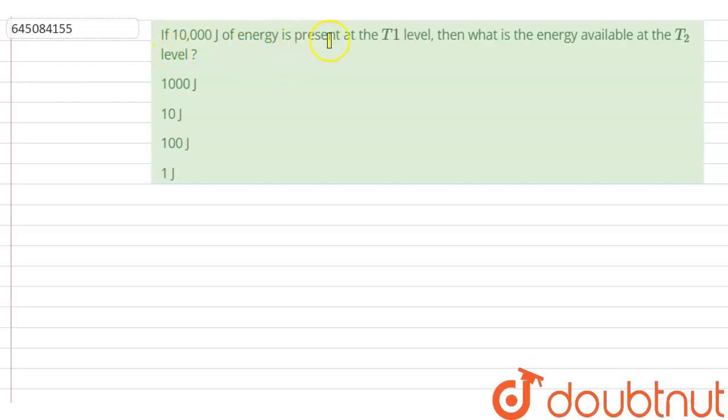Hello students, here's a question: if 10,000 joules of energy is present at the T1 level, trophic level 1, then what is the energy available at the T2 level, that is trophic level 2? Options: 1000 joules, 10 joules, 100 joules, 1 joule.